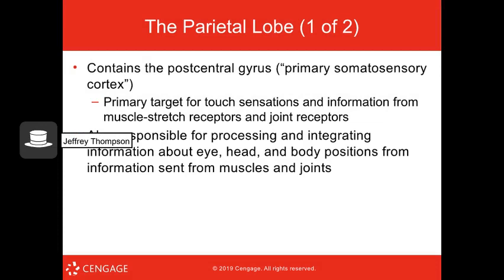The parietal lobe has the postcentral gyrus, or primary somatosensory cortex. This is where sensations of touch and information from muscle stretch receptors and joint receptors are processed. It's also responsible for processing and integrating information about eye, head, and body positions from muscles and joints — for instance, helping you dodge something flying at your face.